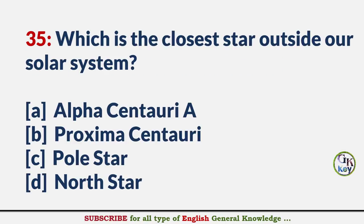Which is the closest star outside our solar system? Answer A: Alpha Centauri A.